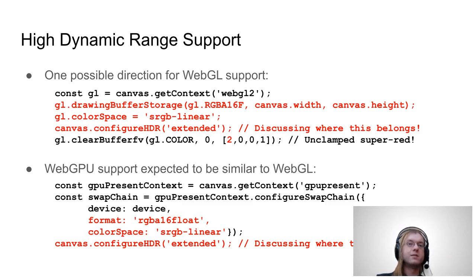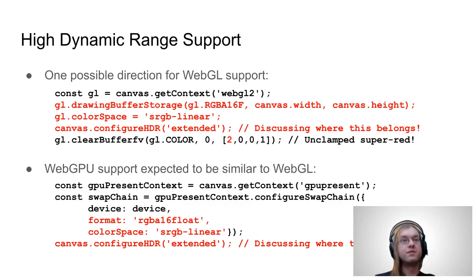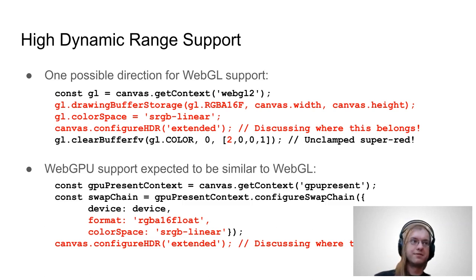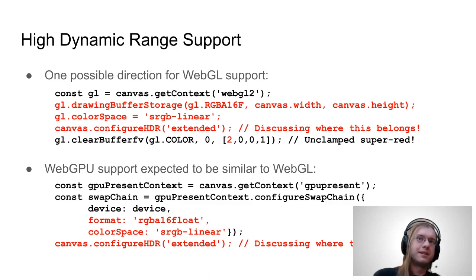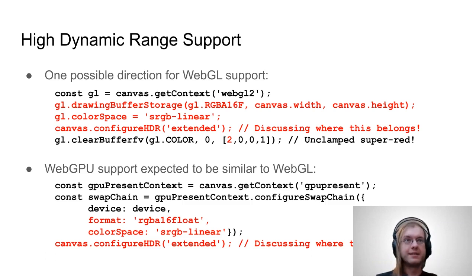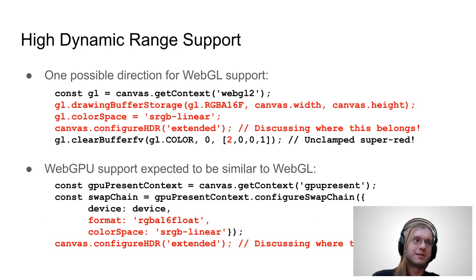On the next slide you can see what that looks like. You can see the drawingBufferStorage command and the gl.colorSpace attribute we talked about, and now a canvas.configureHDR call where we're opting into an extended range. Right after that, we're calling clearBufferFV with a super-red value of 2, 0, 0, 1 — a color that normally would just be truncated down to 1, 0, 0, 1, plain full red. When you have HDR enabled, that lets you go all the way up to whatever the maximum luminance of the display is, so you can display these super-reds. And with WebGPU it's going to be really similar — since it's on the canvas, you set it on the canvas, draw otherwise super-luminant colors to it, and it just works.